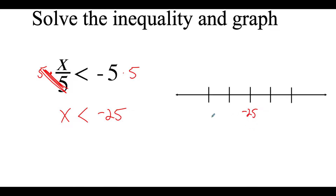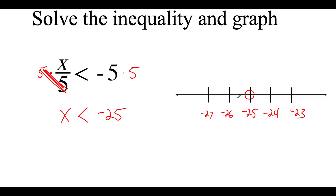I put negative 25 in the middle of the number line. When dealing with negative numbers, smaller means a bigger negative number — so to the left would be negative 26, negative 27, and to the right are smaller negatives like negative 24, negative 23. We've got just a less than symbol, so we put an open dot at negative 25 and shade our arrow heading to the left.